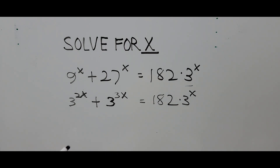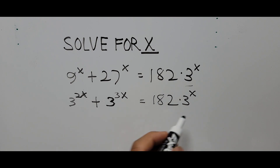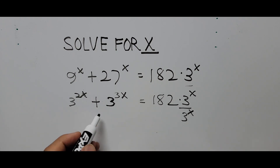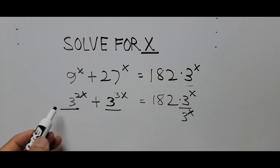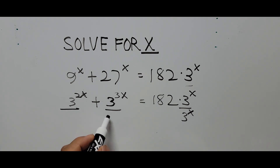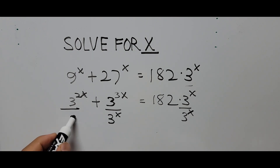The next thing to do is simplify this equation further by dividing by 3 raised to the x. So the base 3 with exponent x — we divide the right side and we do the same on the left side of the equation, dividing the whole thing by 3 raised to the x power.